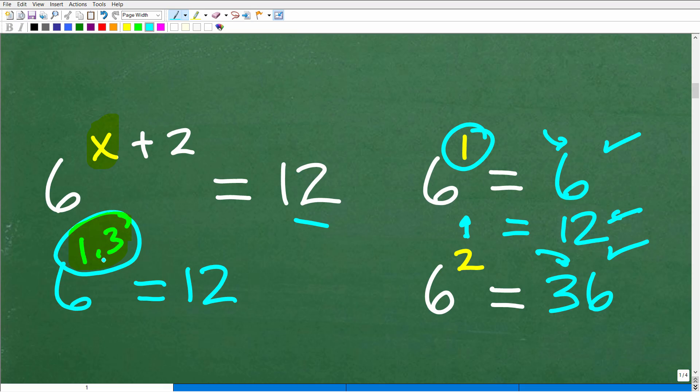...has to be kind of somewhere in this neck of the woods, 1.3. So the only way we can get to this, this right here, has to be some sort of negative value, right? So if it was negative 1, negative 1 plus 2 is a positive 1.